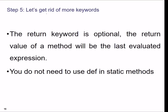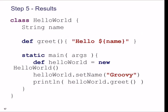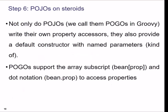We can also get rid of more keywords. The return keyword is optional — the return value of a method will be the last evaluated expression. You also do not need to use def in static methods. So if something is a return type, you don't need to write return explicitly — just write hello dollar-name and that will be the return value.